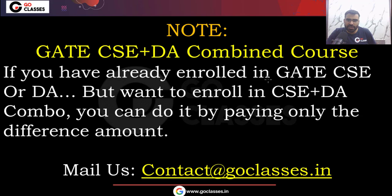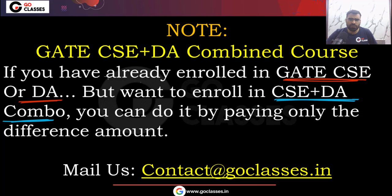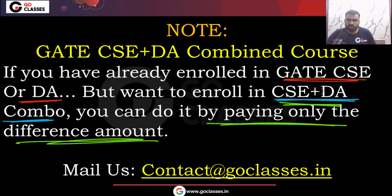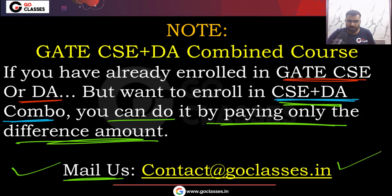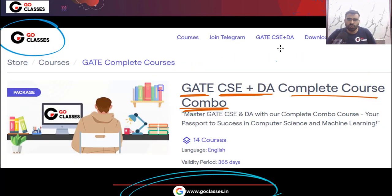If you have already enrolled for the GET CSE or DA individual course and want to join the GET CSE plus DA combo course, you can do this by paying only the difference amount between the combined course and the individual course. To upgrade, you can send us a mail. If you haven't joined any course and want to join the combined or individual courses, just visit the GO Classes website and enroll.